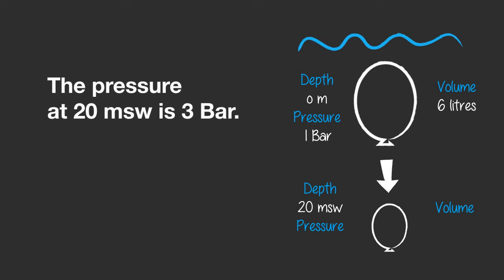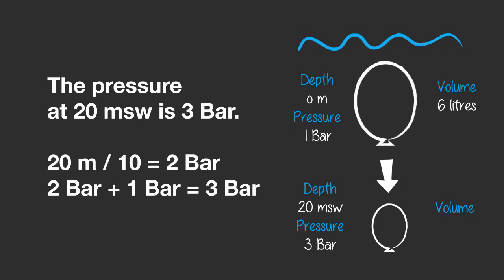To work this out, we first need to know what the pressure is at 20 meters of seawater. This is 3 bar. Remember, 20 meters divided by 10 equals 2, plus 1 bar of the surface equals 3 bar in total.